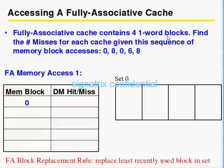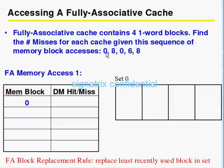Fully associative cache contains four one-word blocks. Find the misses for each cache given this sequence of memory block accesses — same sequence: 0, 8, 0, 0, 6, 0, 8.